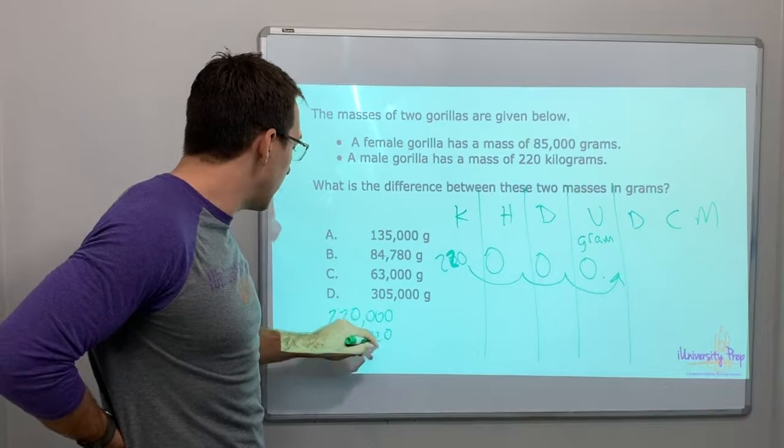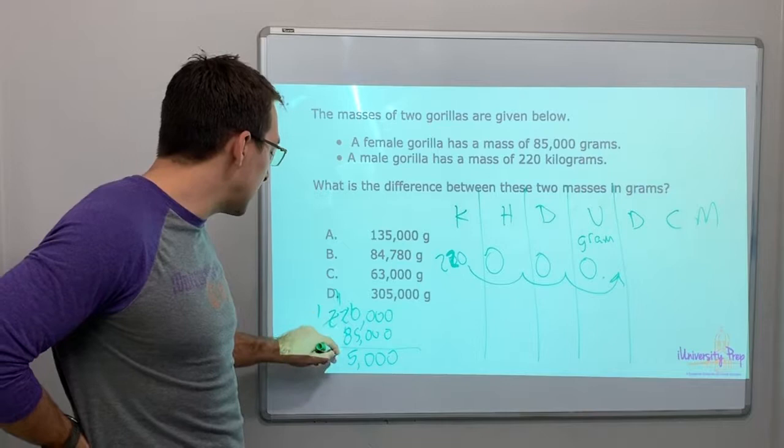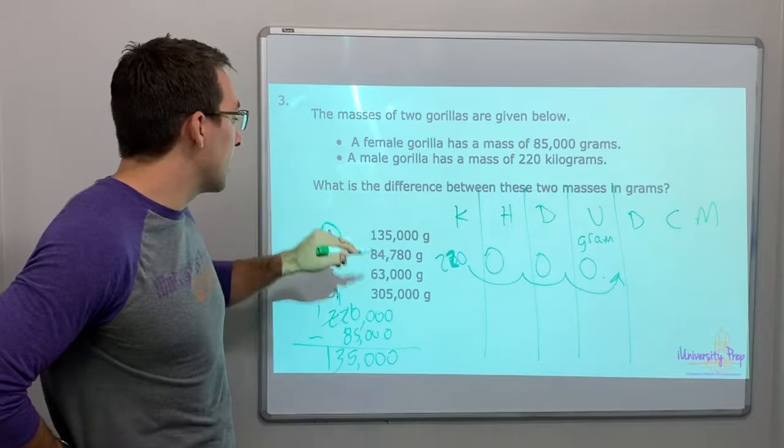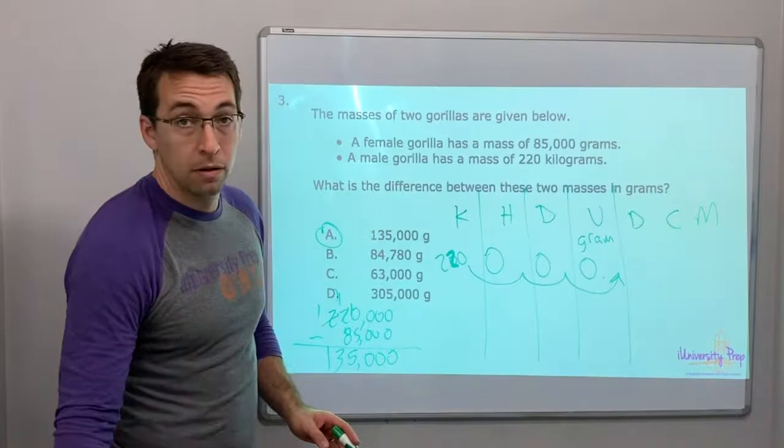So let's subtract 220,000 grams minus 85,000 grams. 10 minus 5 is 5. 1 minus 8. We can't do it. We'll borrow from the two. 11 minus 8 is 3. And then 135,000 grams. That's it. Here's the trick though. One, two, three columns. We moved our unit conversion three columns, so we added three zeros.